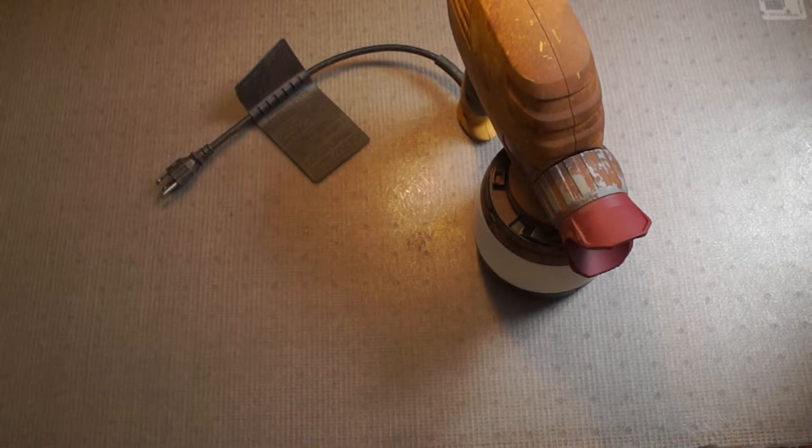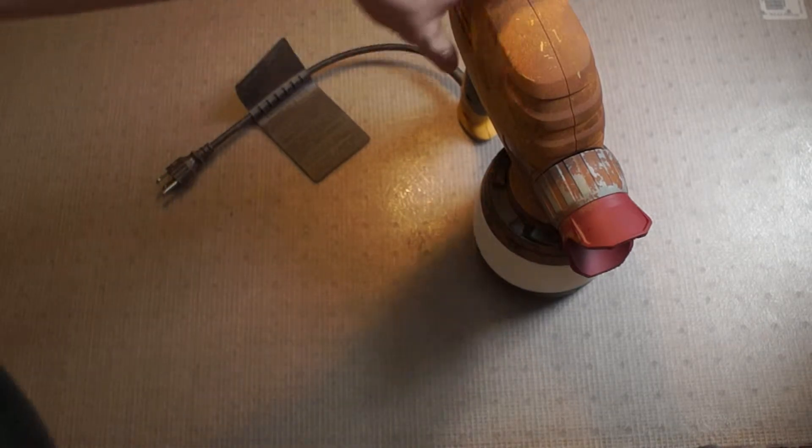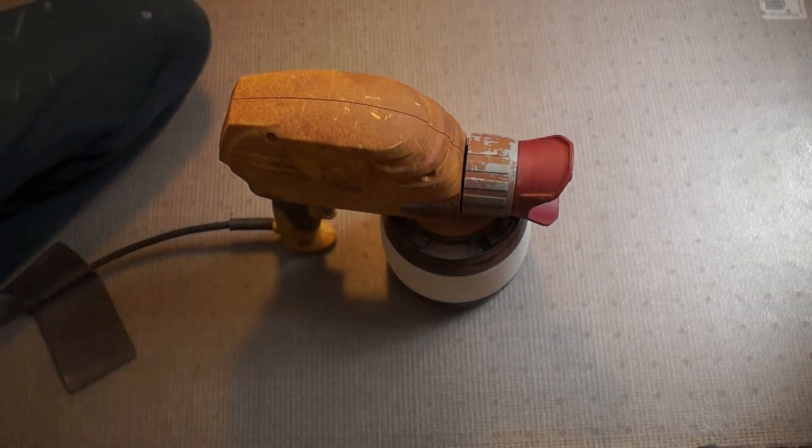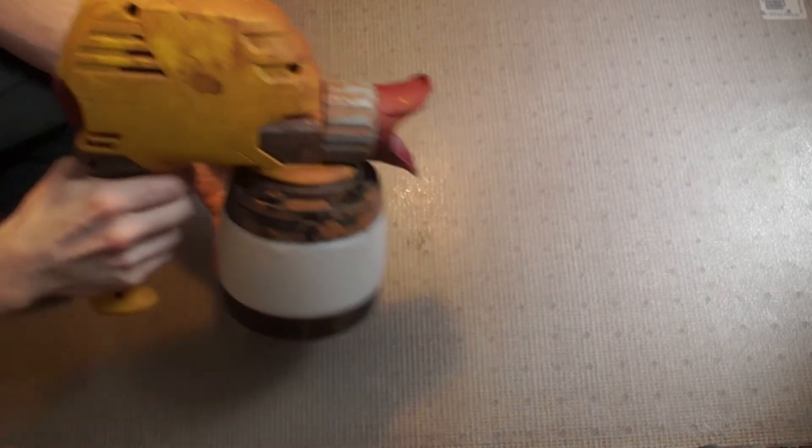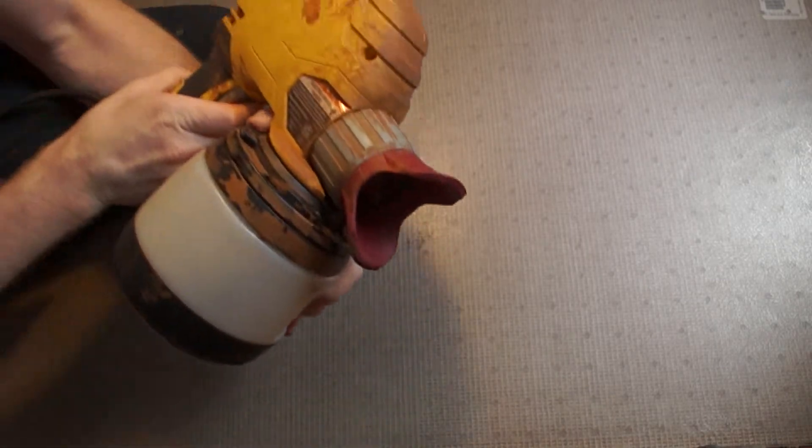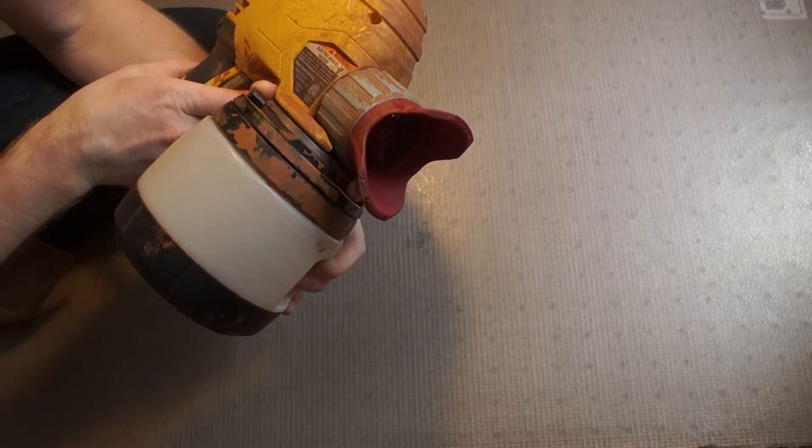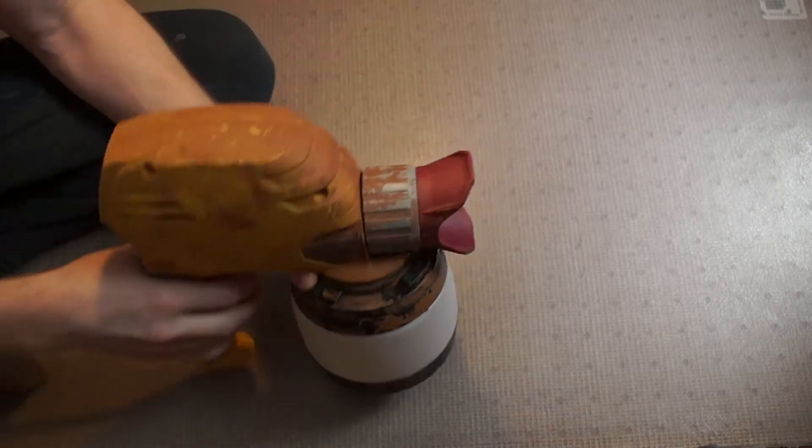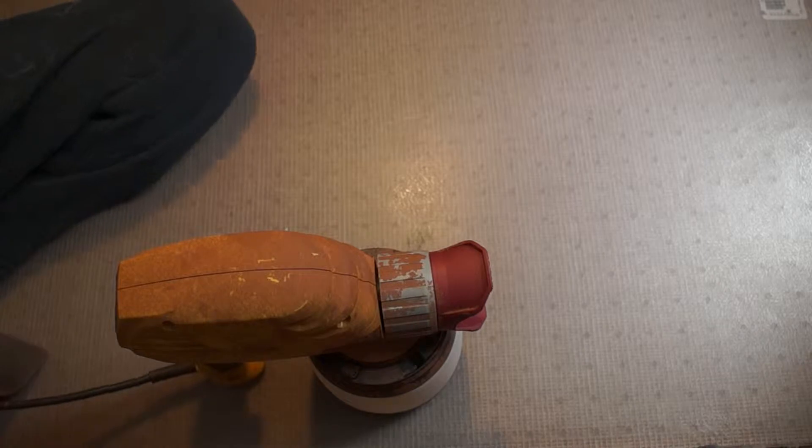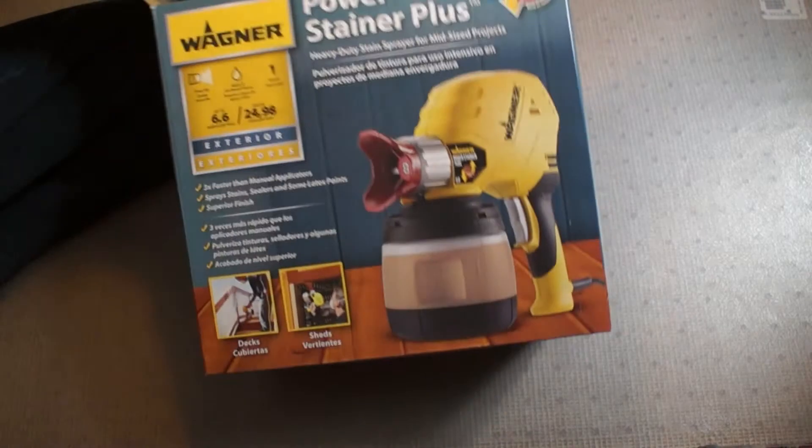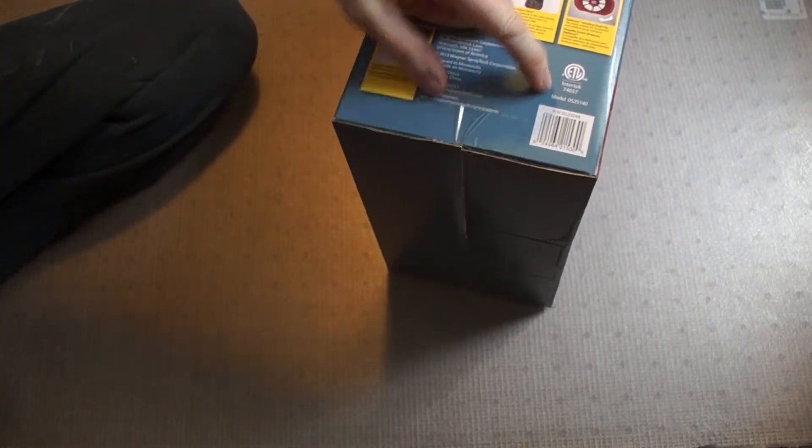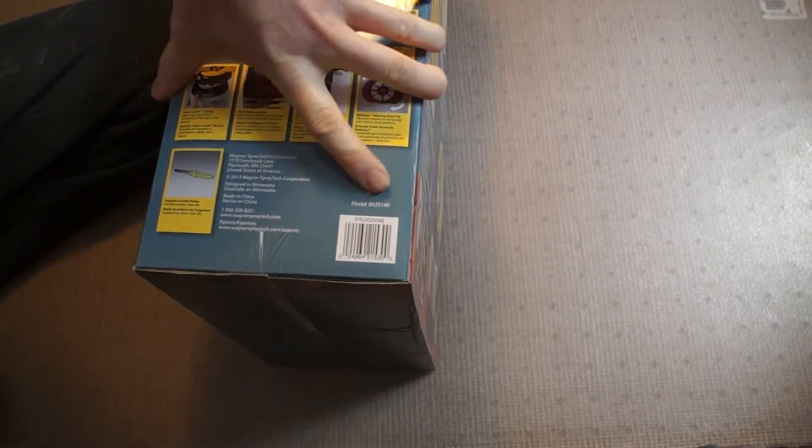All right, this is going to be a review of a sprayer. It's a paint and staining sprayer. It's a Wagner model number 0525140, comes in the box like this. The model number is going to be on the side right there next to the barcode.